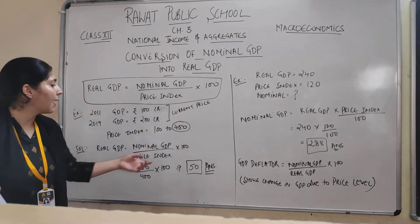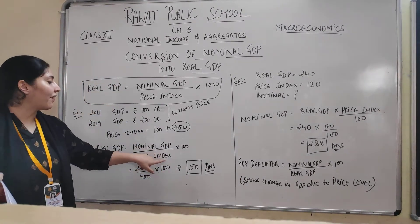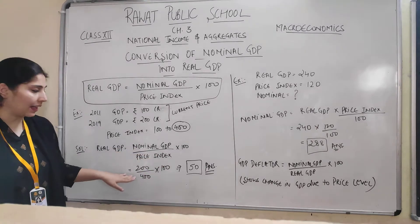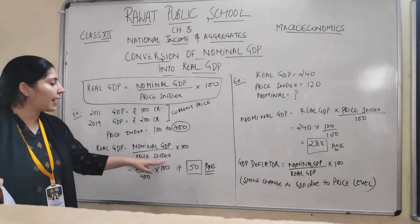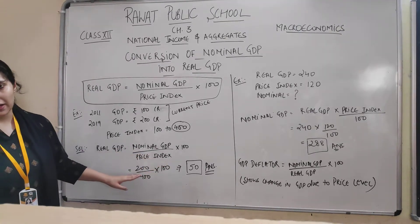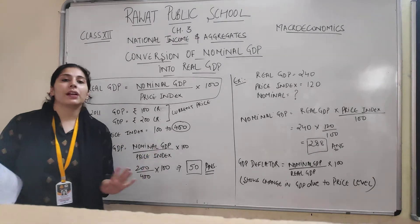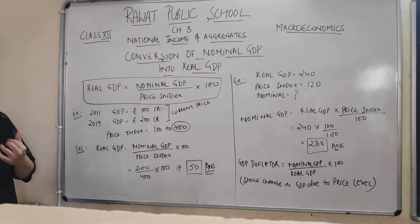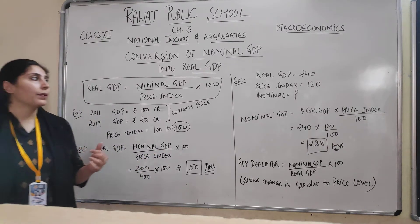Real GDP is 50 crores. This means that nominal GDP showed us that in 2019, gross domestic product was 200 crores — but actually, the real GDP is only 50 crores. This is how we convert nominal GDP into real GDP using the price index.